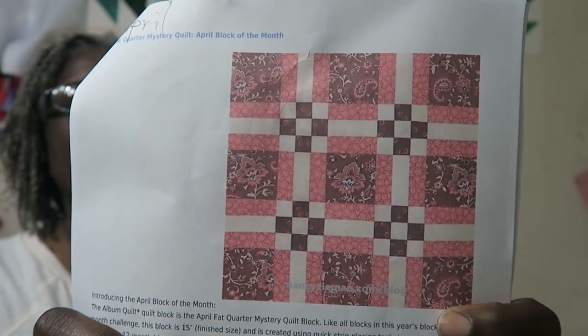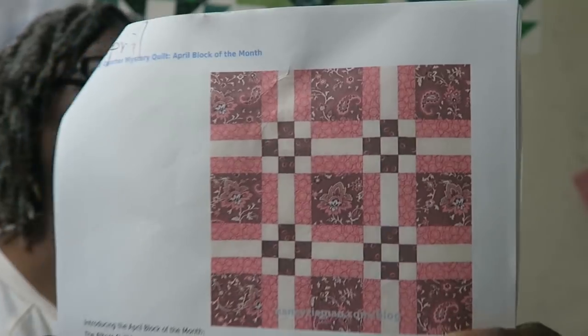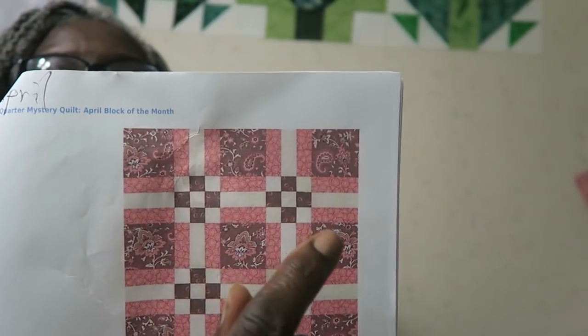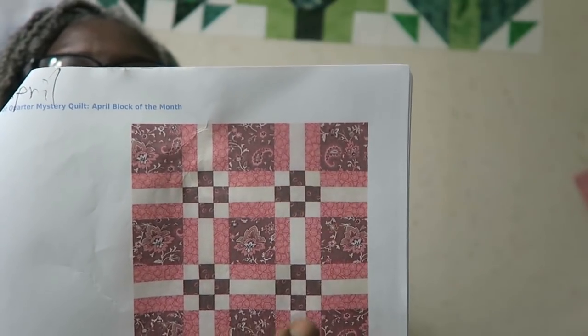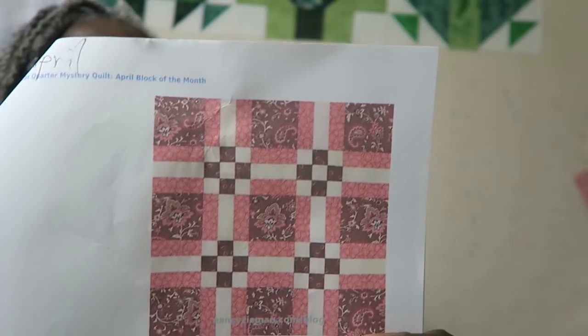The piecing on this is very straightforward. We're going to do a lot of strip piecing. So for these fence rail blocks or rail fence blocks, that's going to be strip pieced, and then these little nine patch blocks in the center will also be strip pieced.